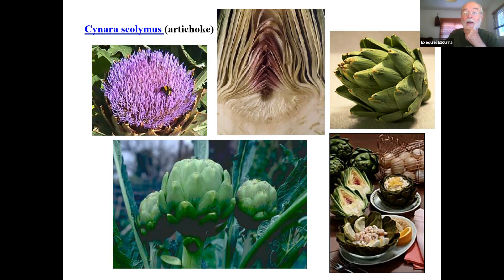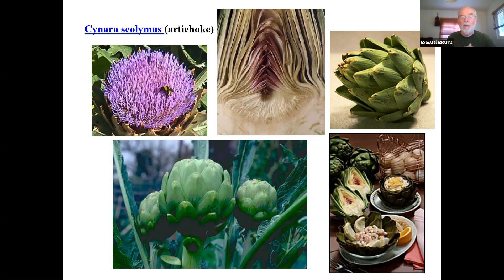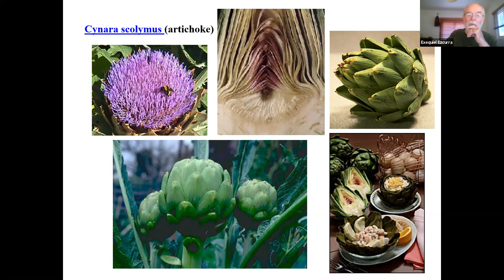An economically important plant — I personally love it — is the artichoke, Cynara scolymus. The artichoke is very closely related to Cynara cardunculus, the common thistle that forms the emblem surrounding the shield of Scotland and the emblem of the Scottish nation. The common thistle is found throughout Europe and many other parts of the old world, and is also naturalized in California.